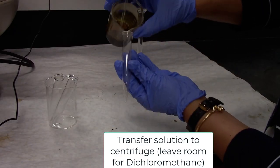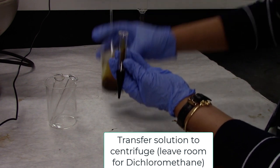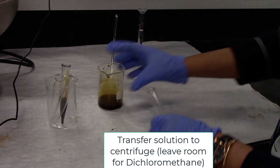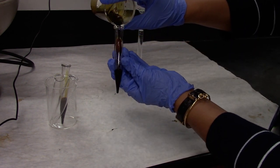Transfer the coffee solution into 3 to 4 centrifuge tubes, fill about halfway through so we can leave some room for dichloromethane or DCM.